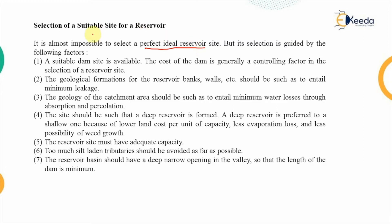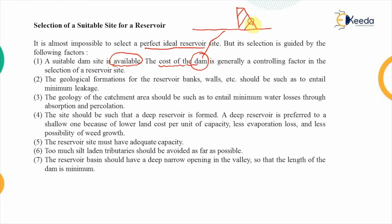The first factor is the availability of a suitable dam site. If we do not have site availability in the area where we want to construct a reservoir, then we cannot have a perfect site. The cost of the dam is generally a controlling factor in the selection of the reservoir site. The dam is the barrier constructed on the river to accumulate water behind it, and the cost of that construction is the controlling factor.